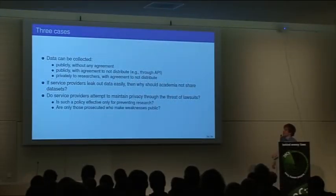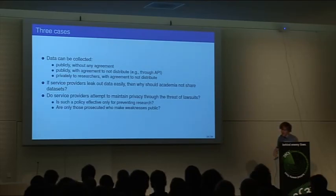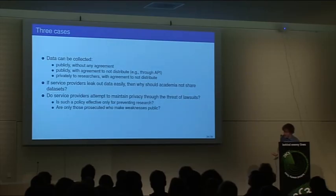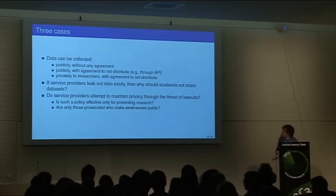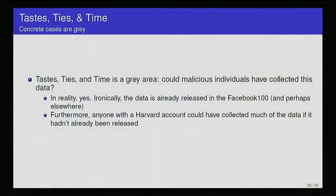The third case would be where data has been shared privately with researchers. This is a case with a lot of the mobile phone data research that's been done. The mobile phone providers share data with academics, and in this case I would definitely say that academics should not be sharing the data sets because it's not available to malicious parties in the first place or not that we know of. It's not as easy for them to access. My point again is if service providers leak this data out easily, then why should academia pretend like it's hard for us to access or we can't share it?